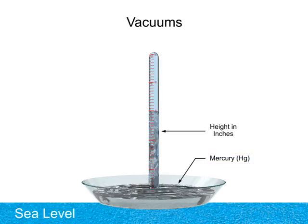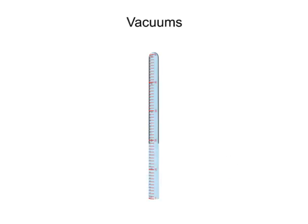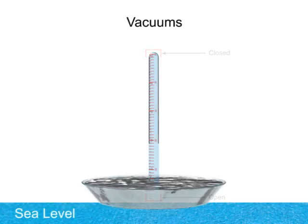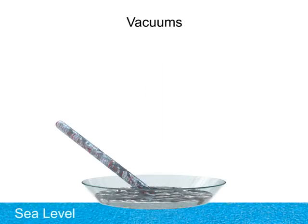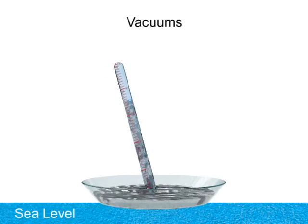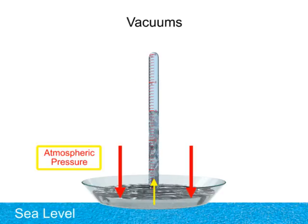Determination of this measurement is made with the use of a mercury barometer. Mercury barometers are made with a long tube closed on the top end, open at the bottom, and immersed in a pool of mercury. The tube is then raised to a standing position without allowing air inside. The mercury level falls until a balance is reached between the weight of the mercury in the column and the atmospheric pressure against the surface of the mercury pool.